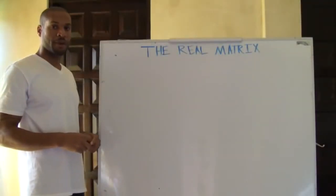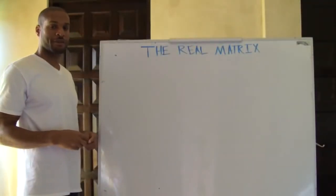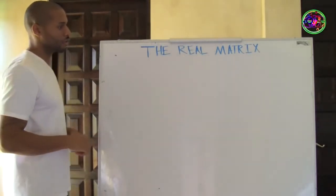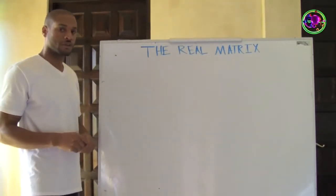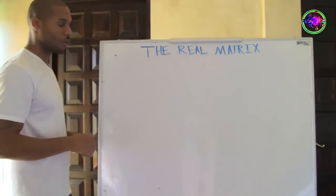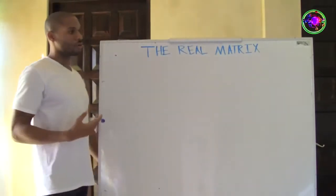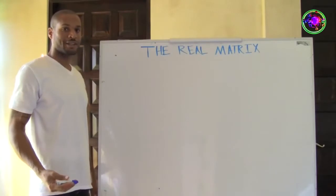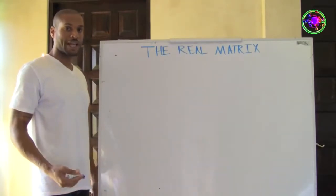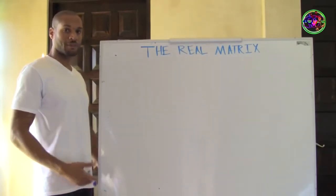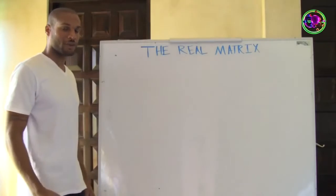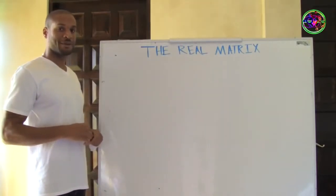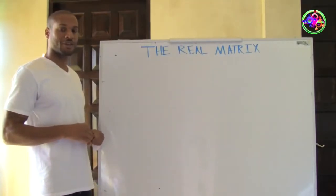Good day, my name is James Evans-Bomer, Director of the Planetary Resistance. Today we're going to do the Real Matrix, which is like a 101. And bringing to this dimension exactly what's been going on for possibly the past 60 billion years.